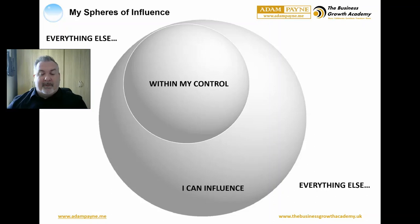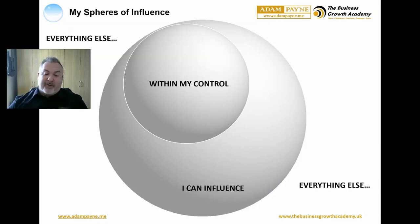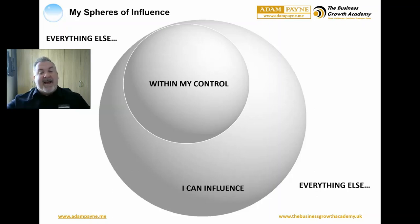Now ask yourself to identify an action, however small, for each of the worry items within the 'my control' circle. For the items in the influence and partial control circle, write down the steps you will take and exactly when you will do them — today or in the next few days. Everything else around the outside, let it go.